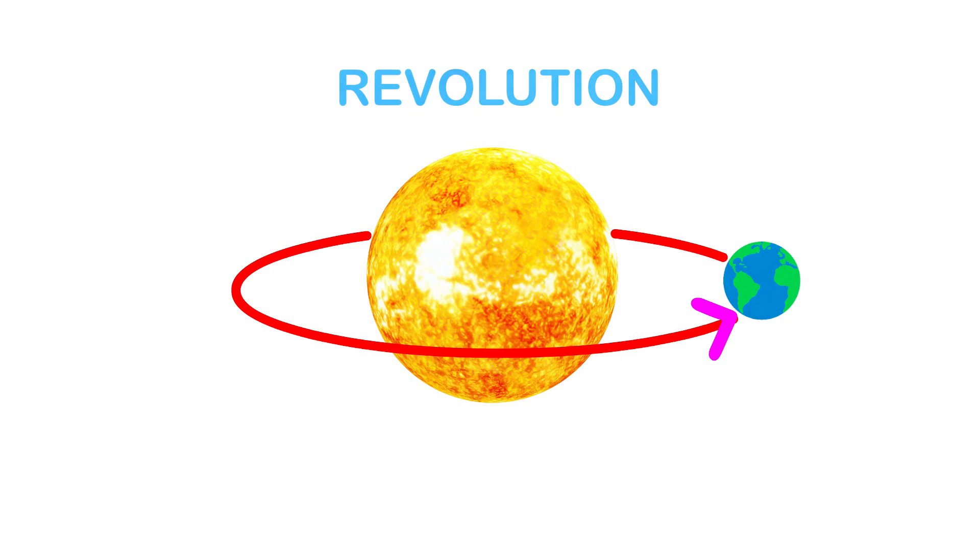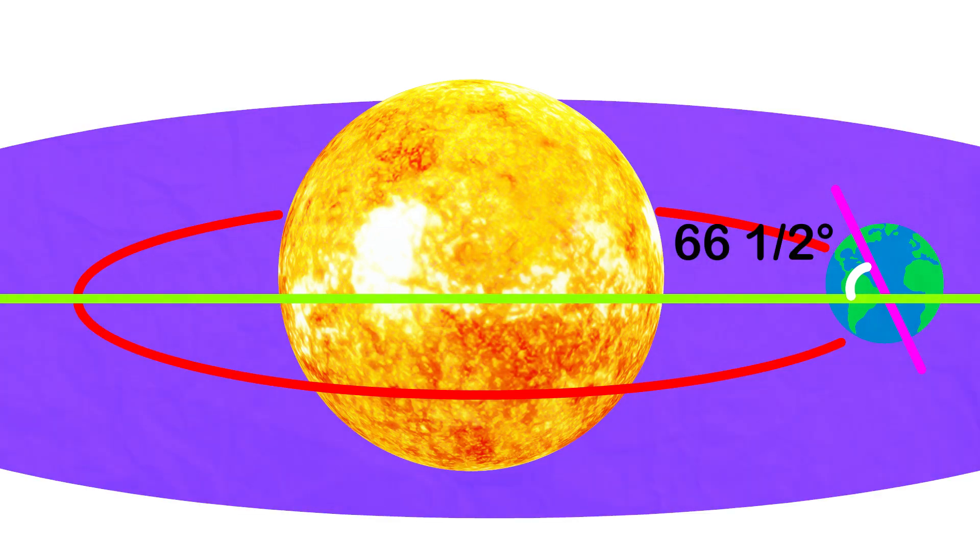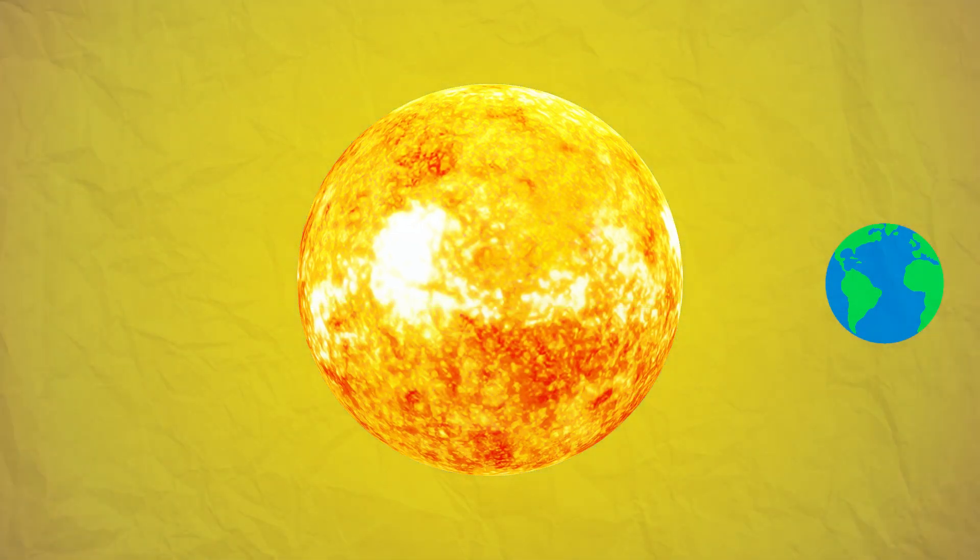The axis of the earth, which is an imaginary line, makes an angle of 66 and a half degrees with its orbital plane. The plane formed by the orbit is known as the orbital plane. The earth receives light from the sun.